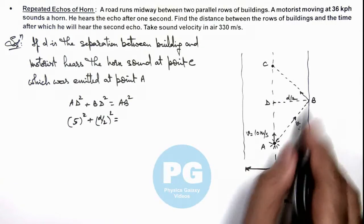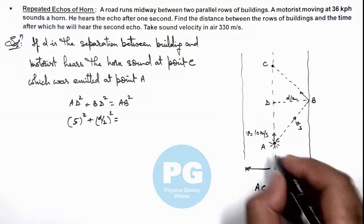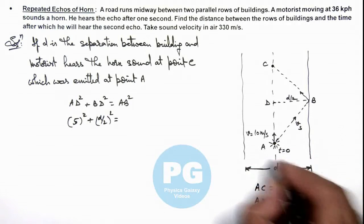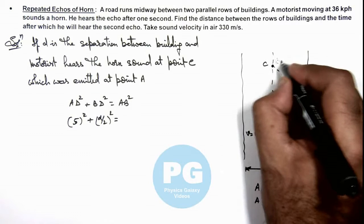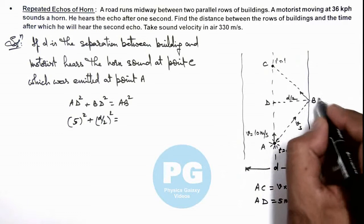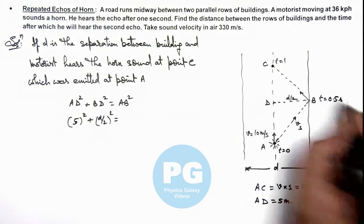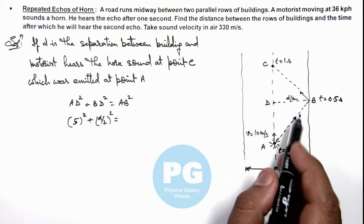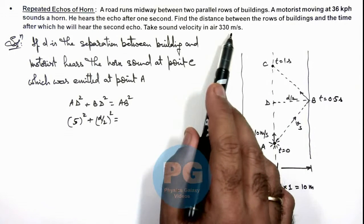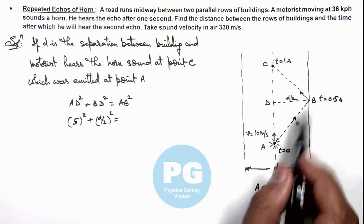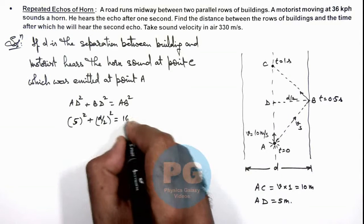Should be equal to AB² and in 0.5 seconds if this was time t = 0 and this is t = 1, this is the time when sound is reflected at t = 0.5 seconds. So as sound velocity is 330 meters per second, it will travel a distance 165 meters in half a second.